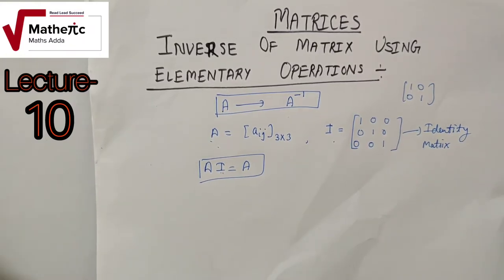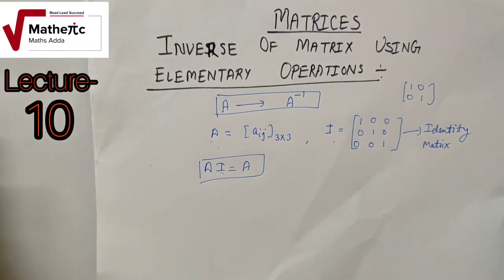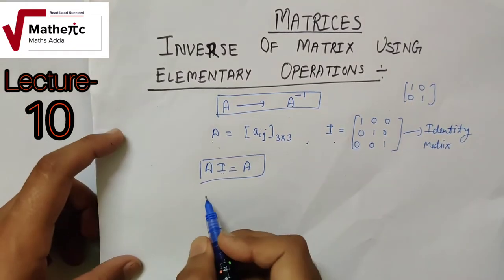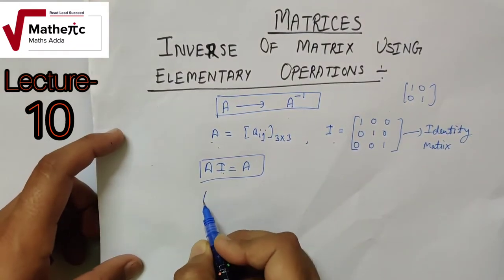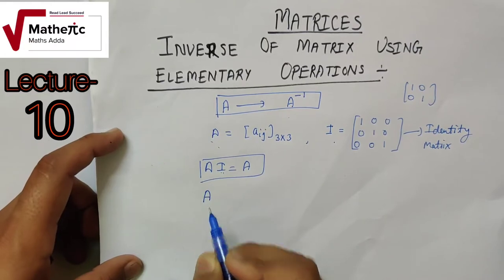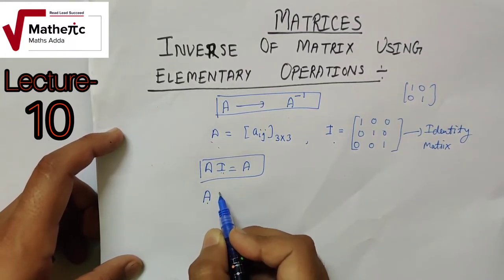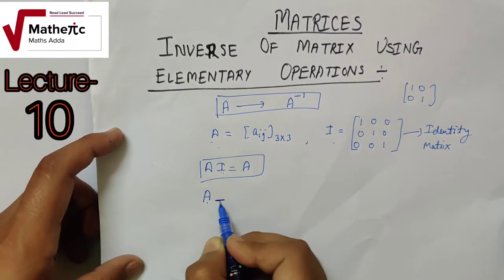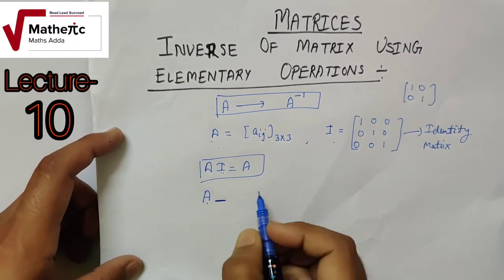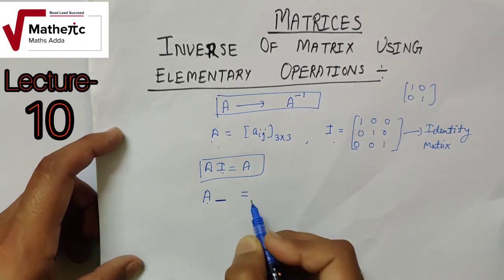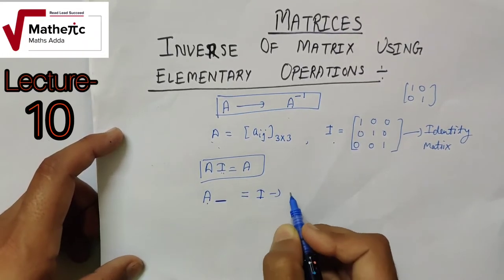What is the inverse of any matrix? Inverse means: if matrix A multiplies some matrix, you get the identity matrix.